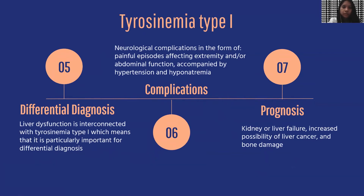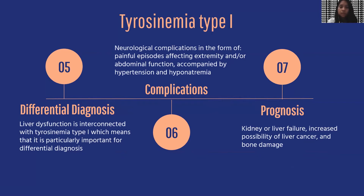For the differential diagnosis of tyrosinemia, liver dysfunction causing serum transaminase rise, decreased coagulation factors, reduction in albumin, and an increase in alpha-fetoprotein are characteristic markers of tyrosinemia type 1. These features mean that liver dysfunction can be diagnosed as tyrosinemia type 1.